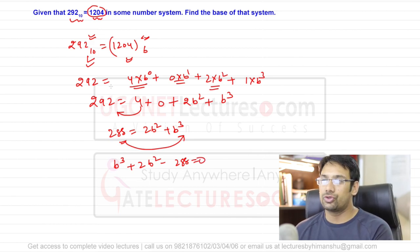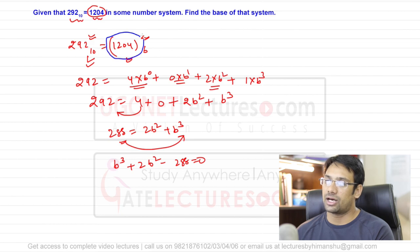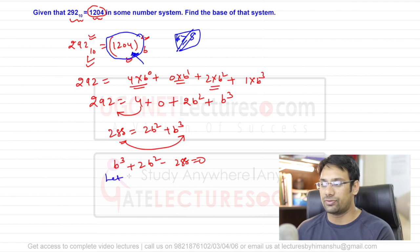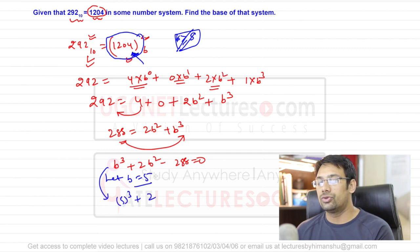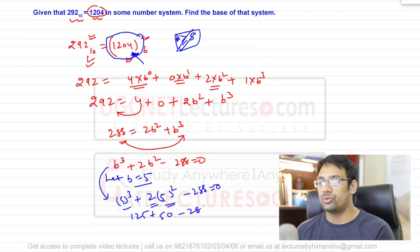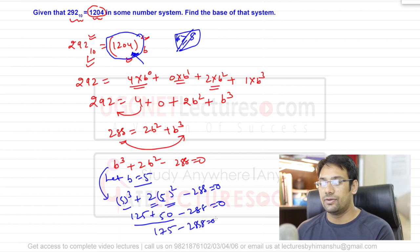To find b, note that the highest digit in 1204 is 4, so b must be greater than or equal to 5. Try b = 5: 5³ + 2×5² − 288 = 125 + 50 − 288 = 175 − 288 ≠ 0. So b cannot be 5.